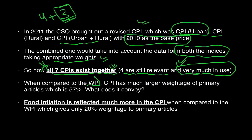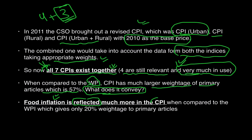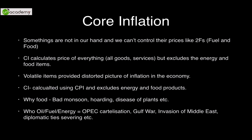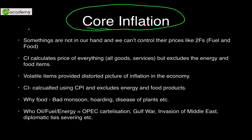Compared to WPI, CPI gives much larger weightage to primary articles — about 57%. This means food inflation is reflected far more in CPI. WPI gives only 20% weightage to primary articles, so food inflation is not as well reflected in WPI. This is extremely critical information.